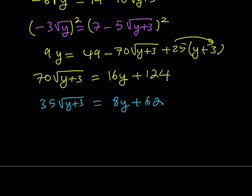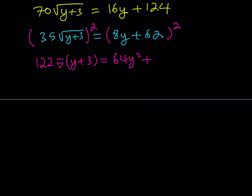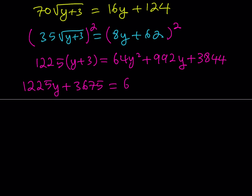At this point I'll square both sides one more time to get rid of all the radicals. 35 squared is 1225 — using the shortcut: 3 times 4 equals 12, then append 25. So 1225 times y plus 3 equals 64y squared plus 992y plus 3844, since 8 times 62 times 2 is 992y and 62 squared is 3844.